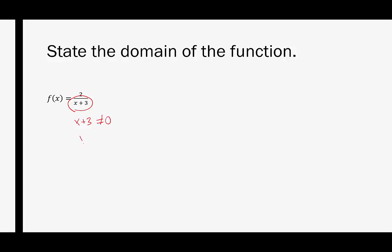That's not allowed in our domain. Then we'll solve for x. x cannot equal negative 3. So we can plug in any value we want for x in the entire real number system except for negative 3, because every other number will produce a real number f of x. The way we write this is our domain is from negative infinity to negative 3 and from negative 3 to infinity.